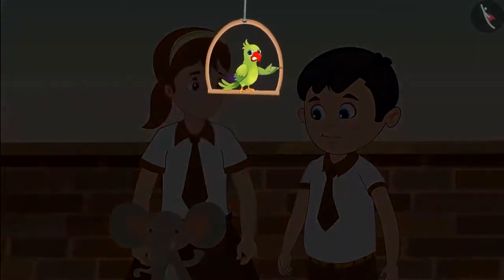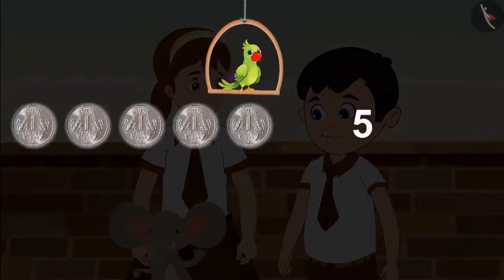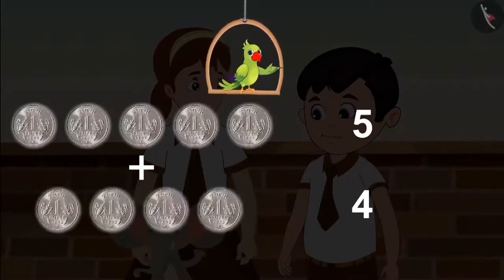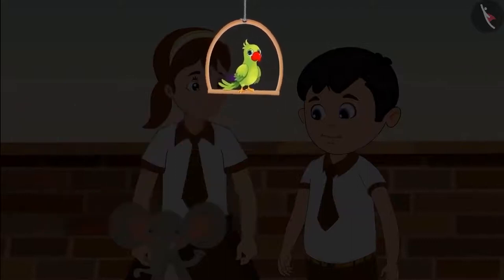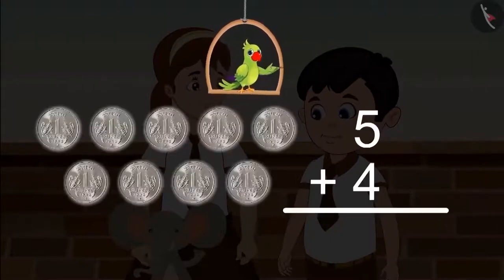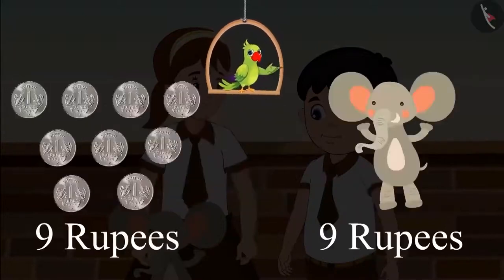Aunty, how much is this elephant? It's for nine rupees. Aarti, I have five rupees. I have four rupees. Come let's see — Chotu has five rupees and Aarti has four rupees, so together they have five, six, seven, eight, nine. We can also write it in an organized manner: when we add five rupees and four rupees, we get nine rupees.